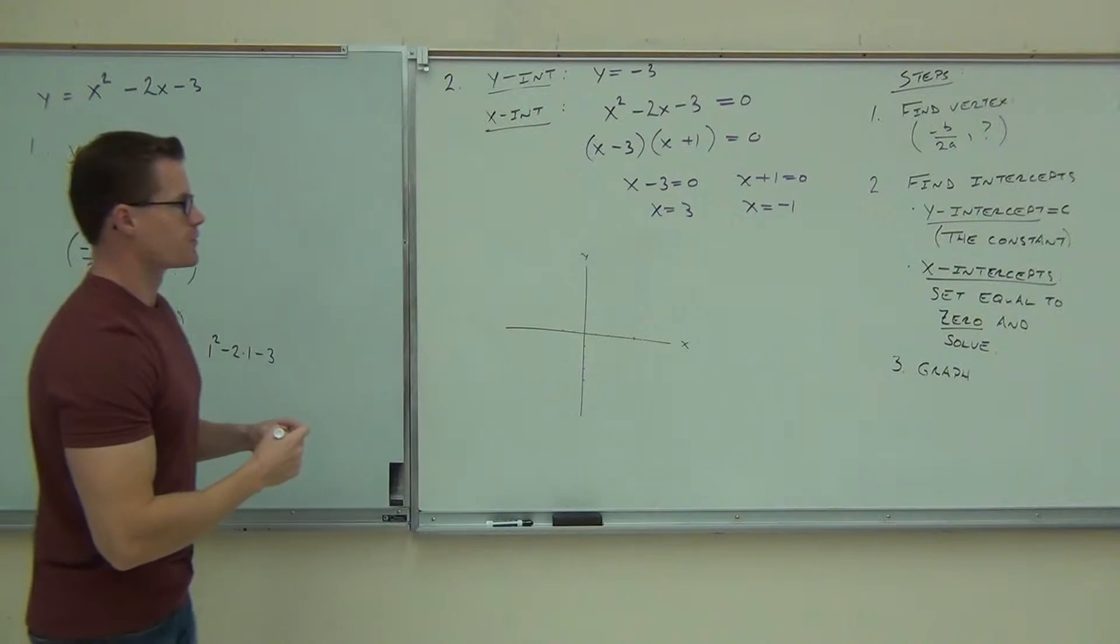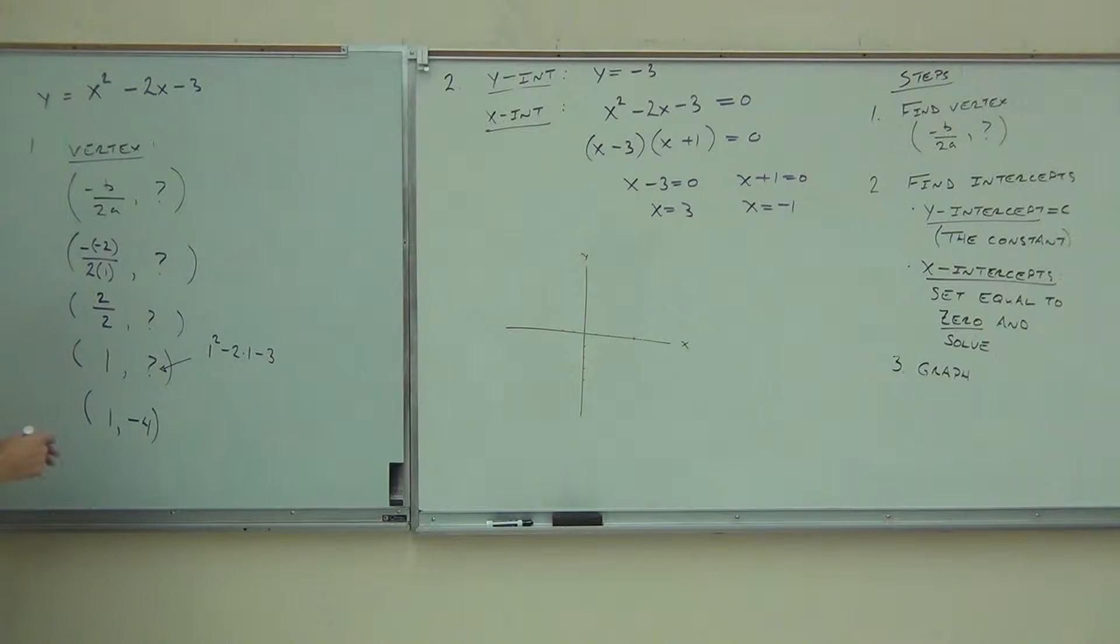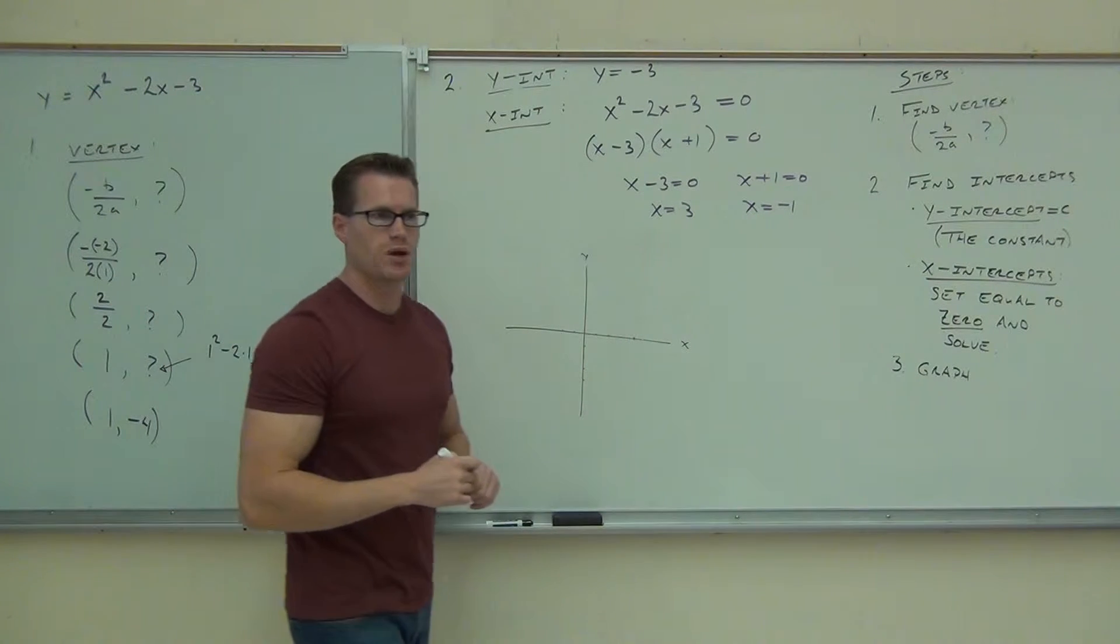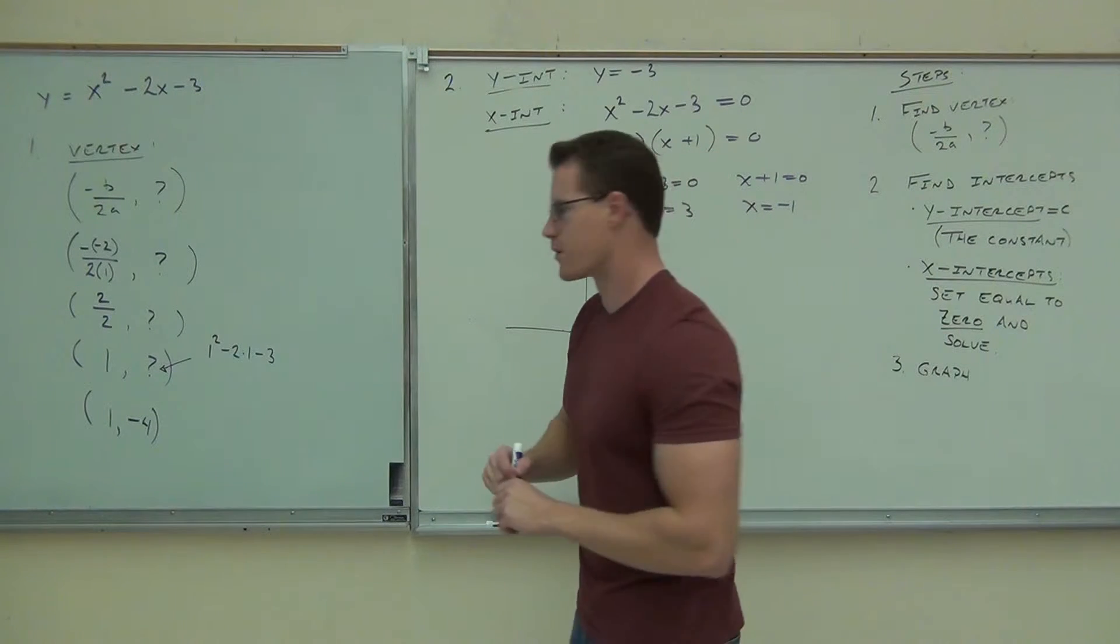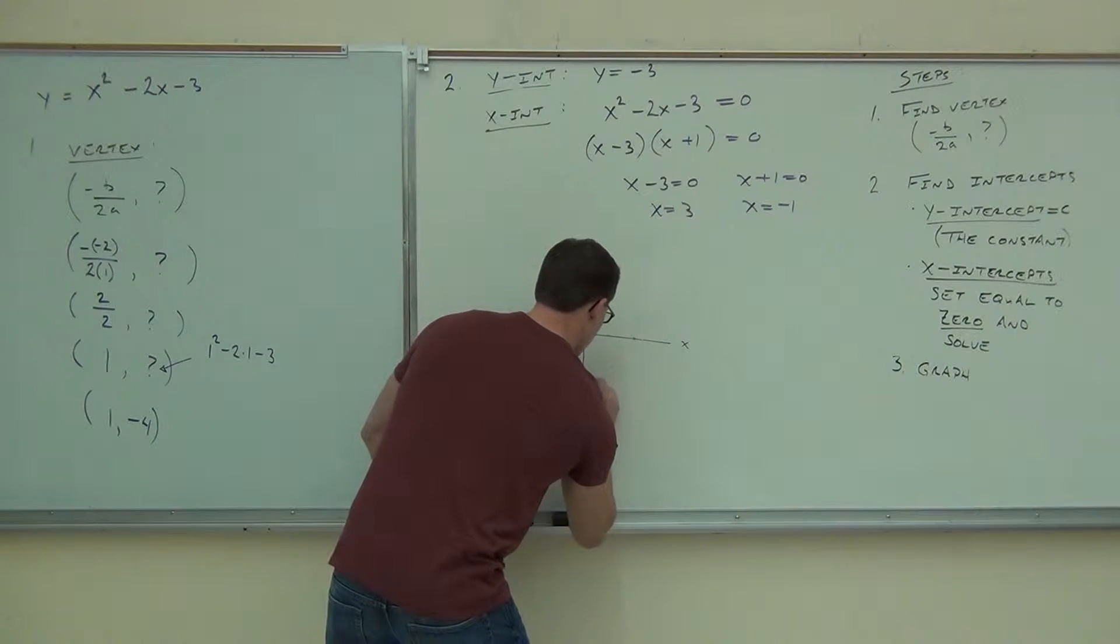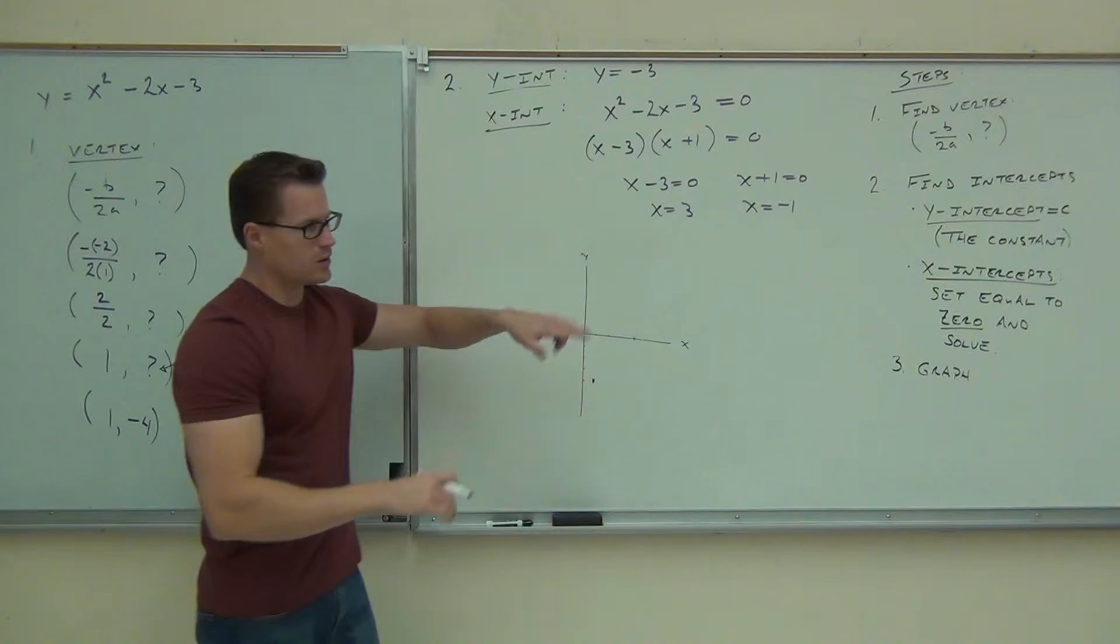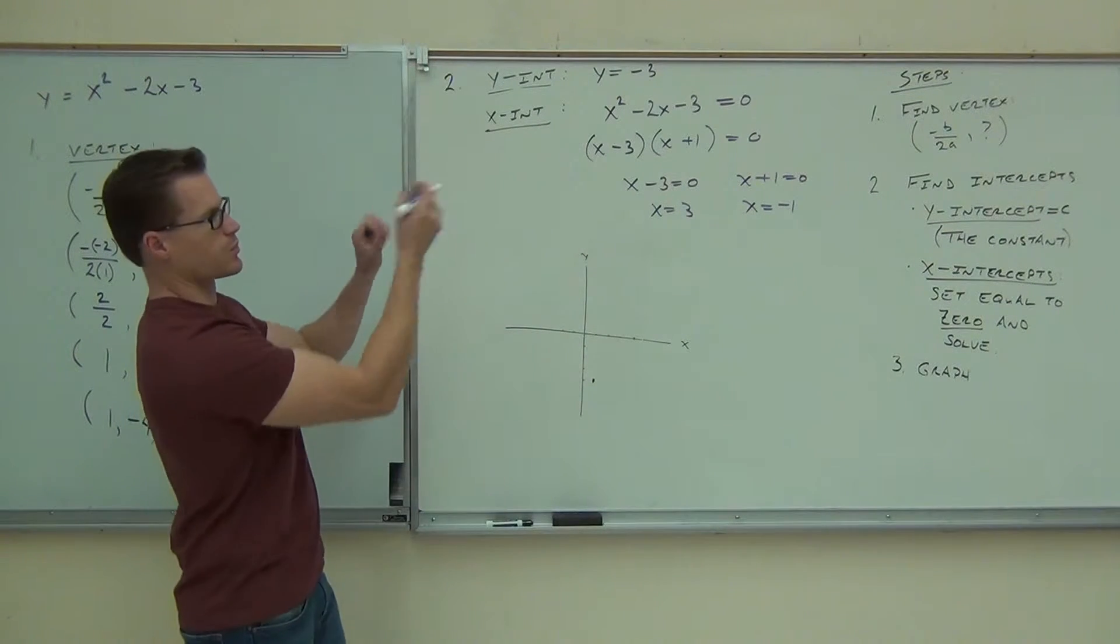Okay, so we're going to start from the very beginning. We're going to graph our vertex first. Go ahead and do that now if you haven't done that already. Plot your vertex. So vertex is 1, negative 4. In this case, that will be the lowest part of my parabola because it is upward facing.